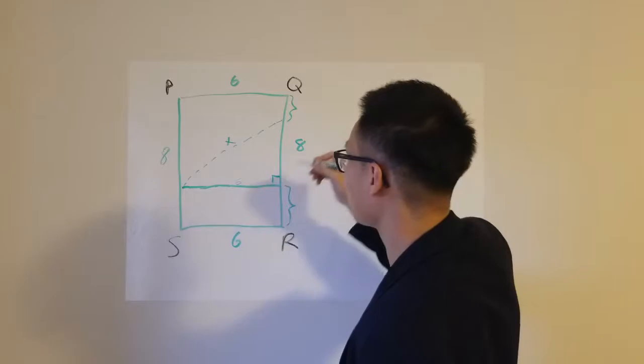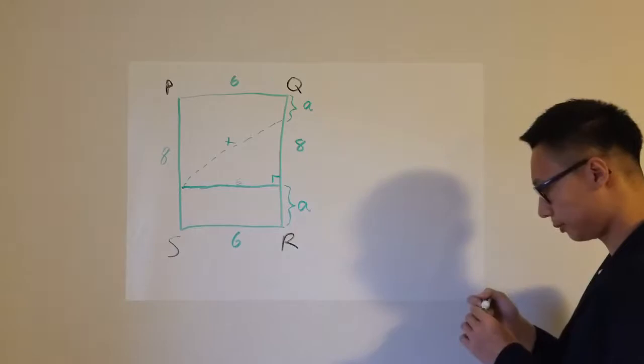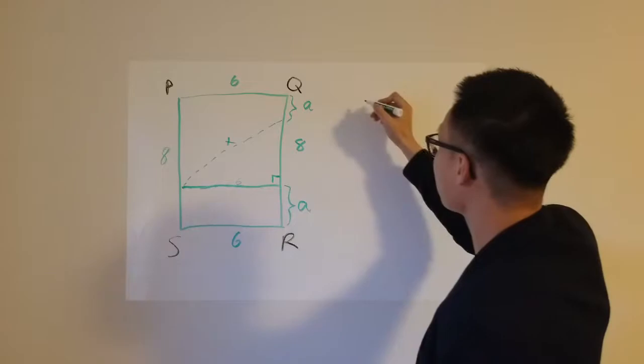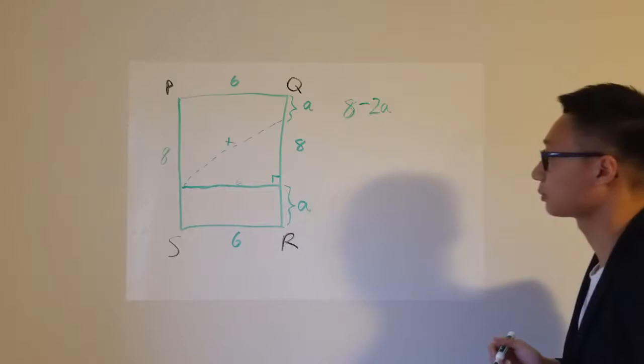So let's say if I were to call this a, this would also be a. Therefore, I know that the length of this side is simply 8 minus 2a. This is my first piece of information.